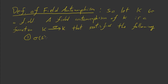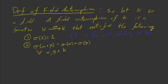First, σ(1) = 1, where 1 is the multiplicative identity of K. Second, σ(α + β) = σ(α) + σ(β) for all α and β in K. The snappy way this is often said is that sigma commutes with addition — it doesn't matter if you add first and then apply sigma, or apply sigma to each element individually and then add; you get the same answer.